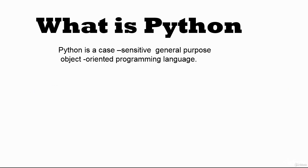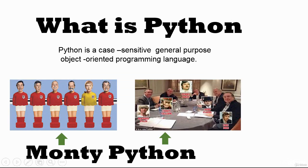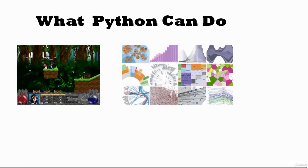Python got its name from the British comedy group called Monty Python. Due to its flexibility, Python can be used to create games, statistical and visual data, and more. Python can also be found used in some of the most famous websites on the planet — either to build them or to run them in one way or another.